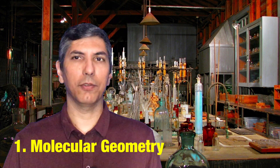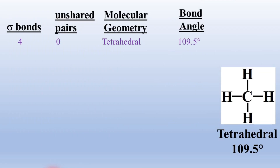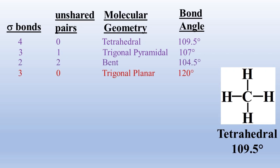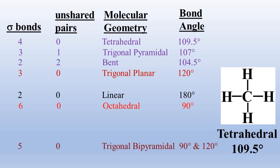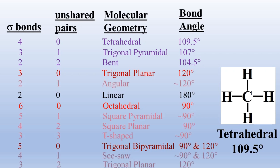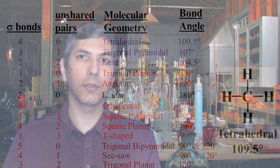Number one: molecular geometry. The number one thing you have to memorize for the AP Chem exam is molecular geometry and bond angles — and there's no way around this. A steric number of four (four slots of electrons around the central atom) has a bond angle of about 109.5 degrees and is called tetrahedral. With one unshared pair it becomes trigonal pyramidal, and with two unshared pairs it's called bent. A steric number of three has a bond angle of about 120 degrees and is called trigonal planar. Two slots gives linear at 180 degrees. Six slots gives octahedral at 90 degrees. Five slots gives trigonal bipyramidal at 90 and 120 degrees. There are other geometries with lone pairs on the central atom that you also need to know.